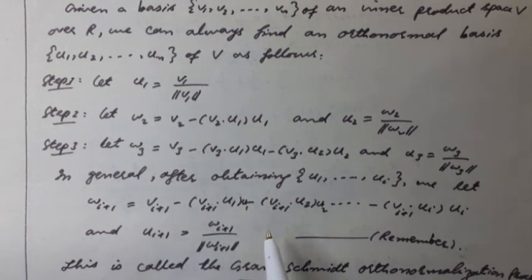minus the inner product of Vi plus 1 with U2 times U2, and so on, minus the inner product of Vi plus 1 with Ui times Ui. And Ui plus 1 is equal to Wi plus 1 over the norm of Wi plus 1.